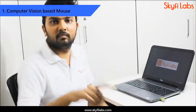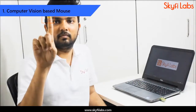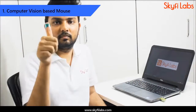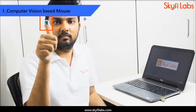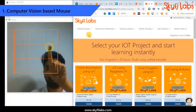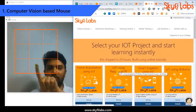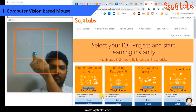First, you will start by developing a computer vision based mouse project using an object tracking algorithm, with which you can control your cursor wirelessly by just showing colored objects.